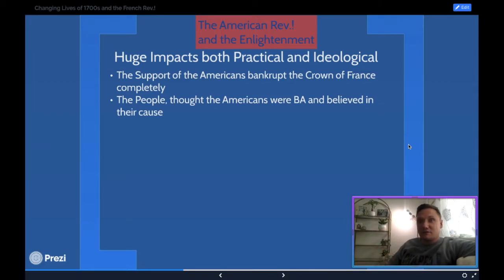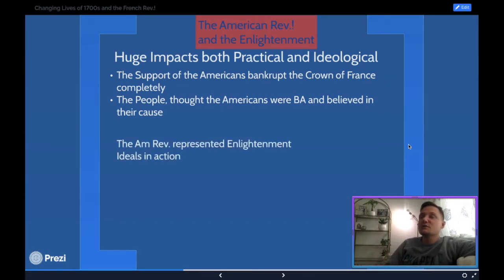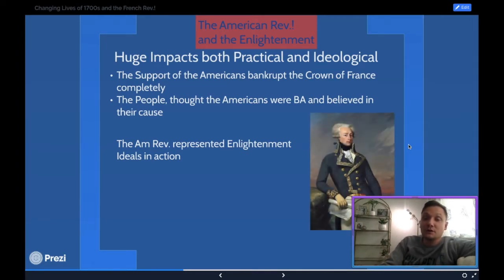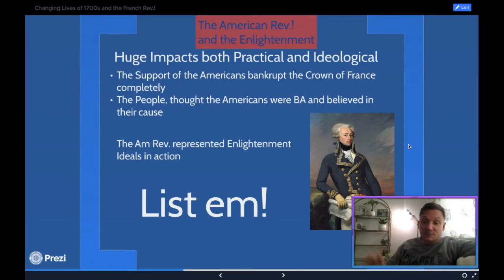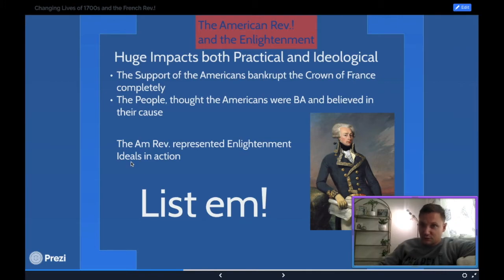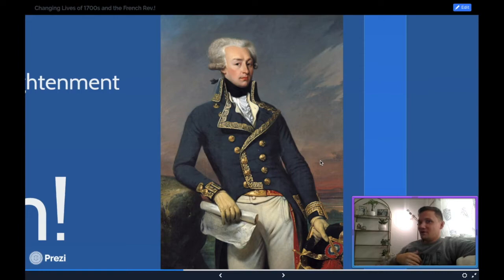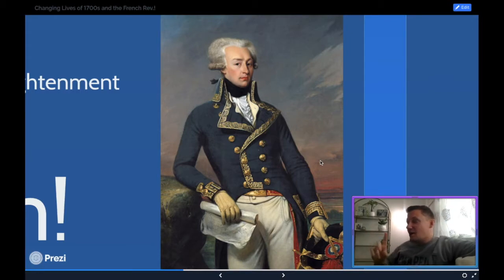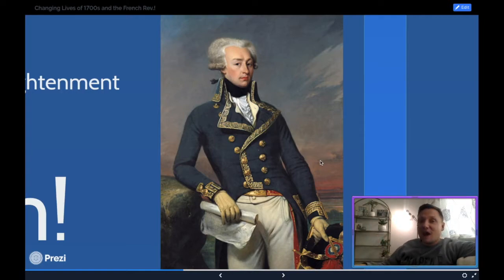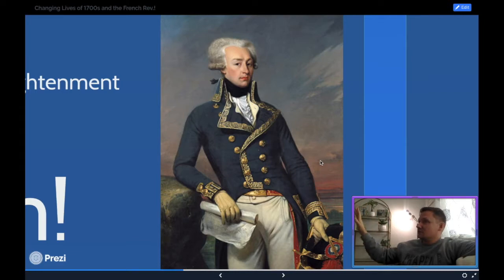Ironically, Louis made a bad economic decision that also screwed him ideologically, because now people wanted a revolution too — like, 'if America can do it, we can do it.' The American Revolution represented Enlightenment ideas in action. And here is the Marquis de Lafayette — not Lafayette as you might say it, but the Marquis de la Fayette. He has a university in Pennsylvania and a region of Louisiana named after him.